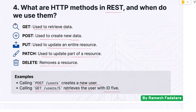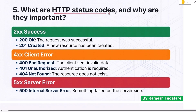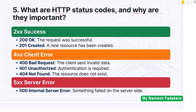Understanding this correctly is crucial for API design. Question 5: What are HTTP status codes and why are they important? Status codes tell clients whether a request succeeded or failed. 200 OK means the request was successful. 201 Created means a new resource has been created.